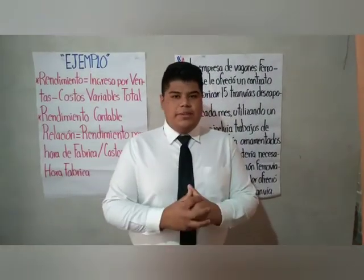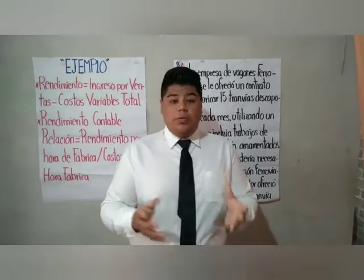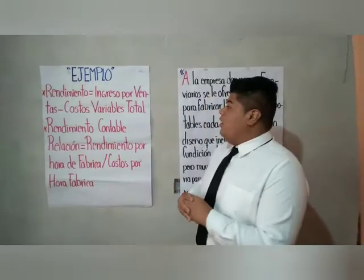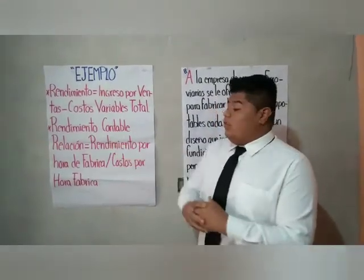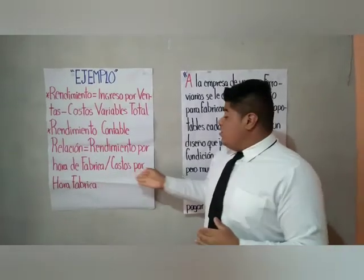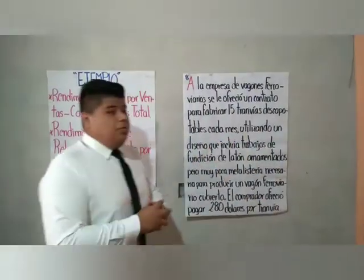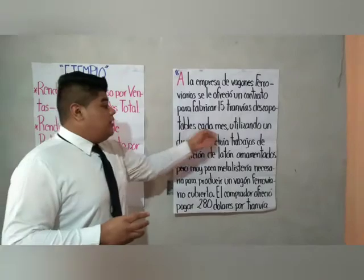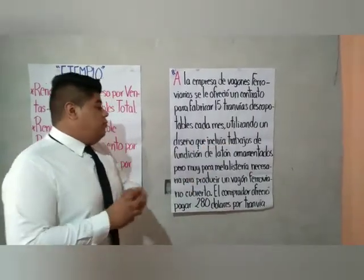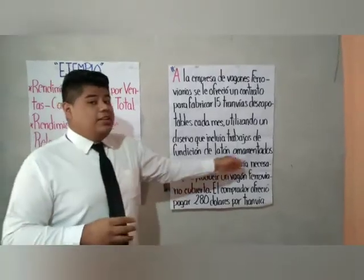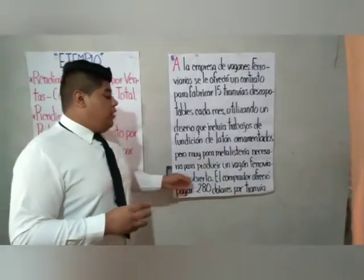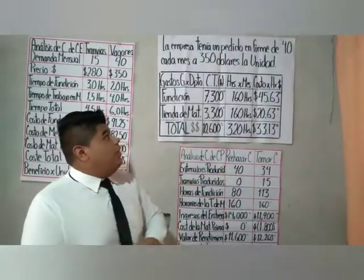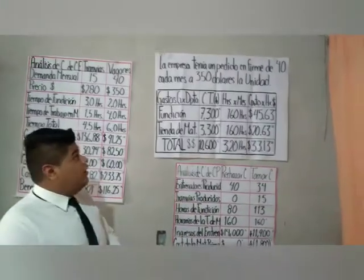Buenas tardes, mi nombre es José David Cruz Becerril y voy a dar un ejemplo de lo que es el Throughput Accounting o Contabilidad de Rendimiento. Las fórmulas son: rendimiento = ingreso por ventas menos costo variable total; y rendimiento contable relación = rendimiento por hora de fábrica sobre costo por hora de fábrica. El ejemplo: a una empresa de vagones ferroviarios se le ofreció un contrato para fabricar 15 tranvías descapotables cada mes con trabajos de fundición de latón ornamentados. El comprador ofreció $280 por unidad, y la empresa tenía un pedido en firme de 40 vagones a $350 la unidad.